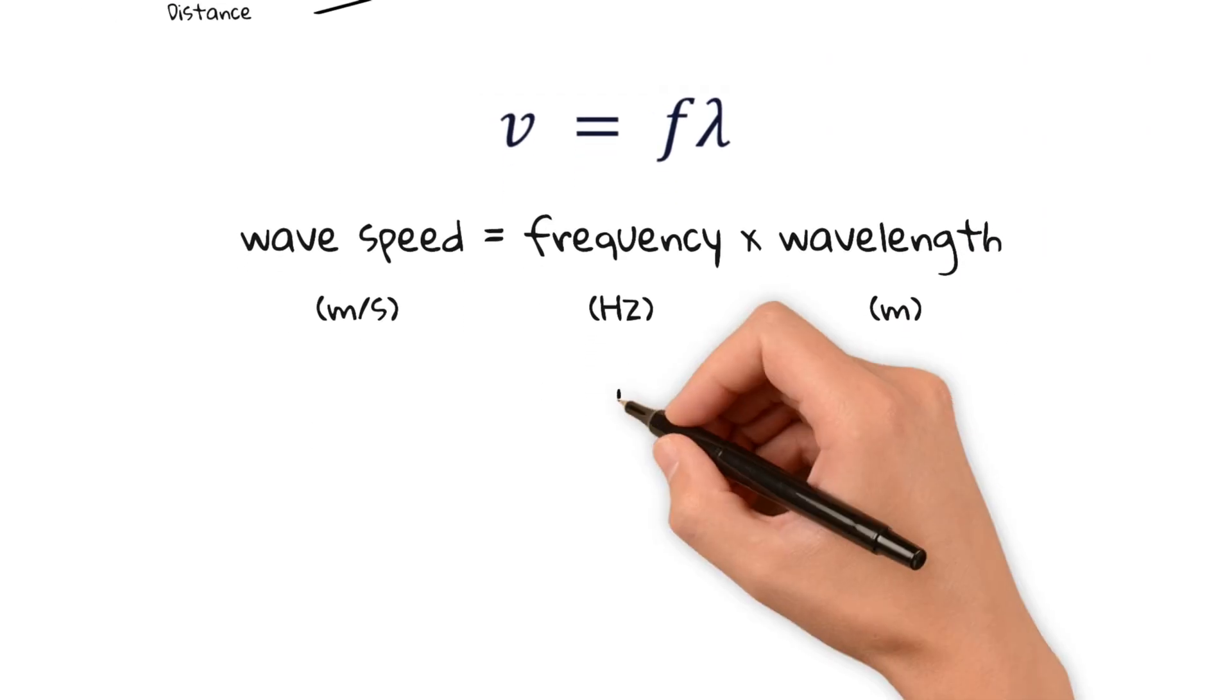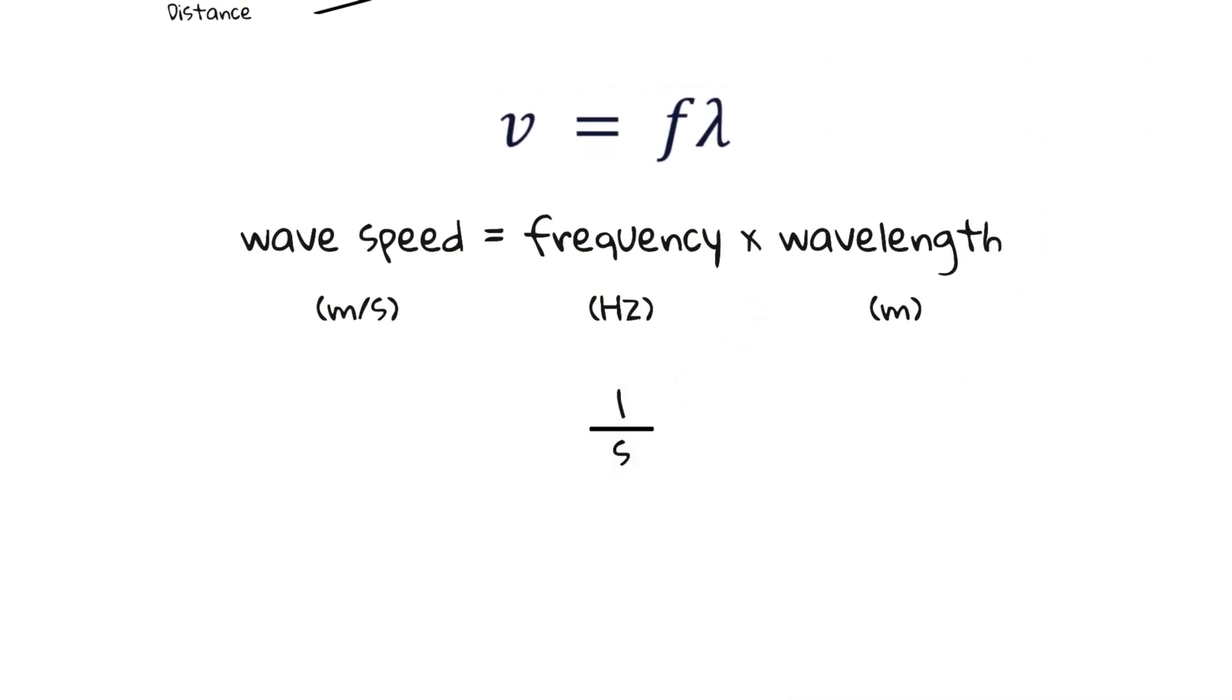Let's also check the units. Hertz is 1 over second, and when multiplied by meters, we get meters per second. Perfect.